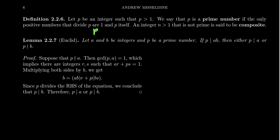We say that if a number is not prime, then we call it a composite number.